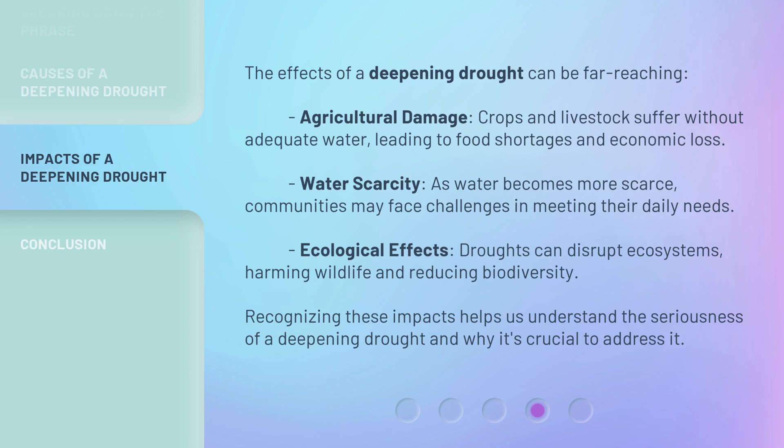Ecological effects: droughts can disrupt ecosystems, harming wildlife and reducing biodiversity. Recognizing these impacts helps us understand the seriousness of a deepening drought and why it's crucial to address it.